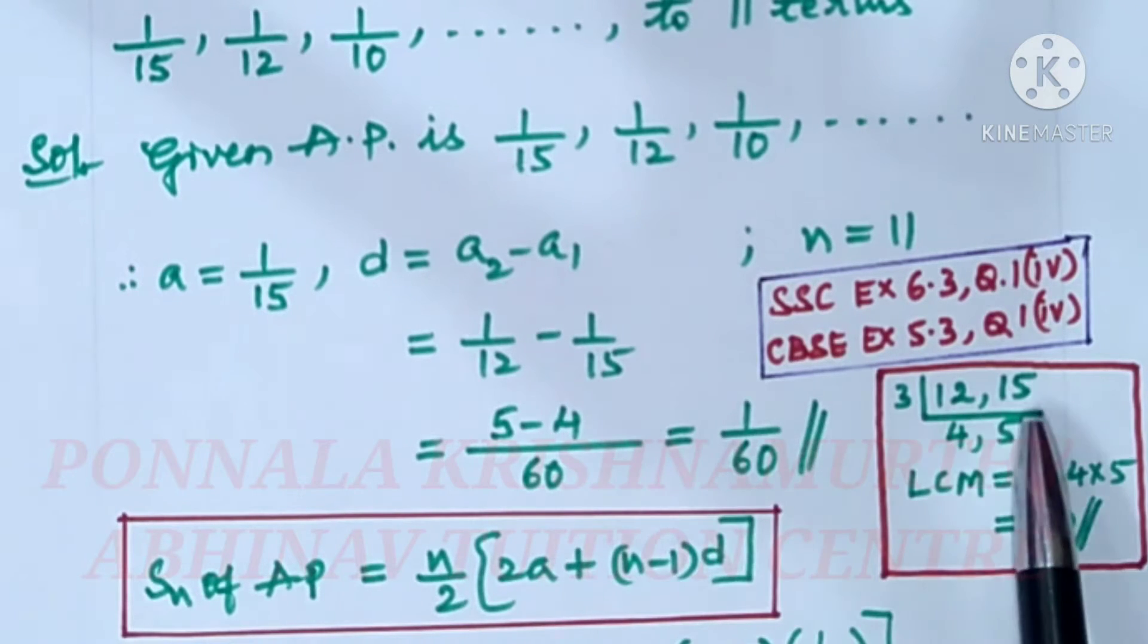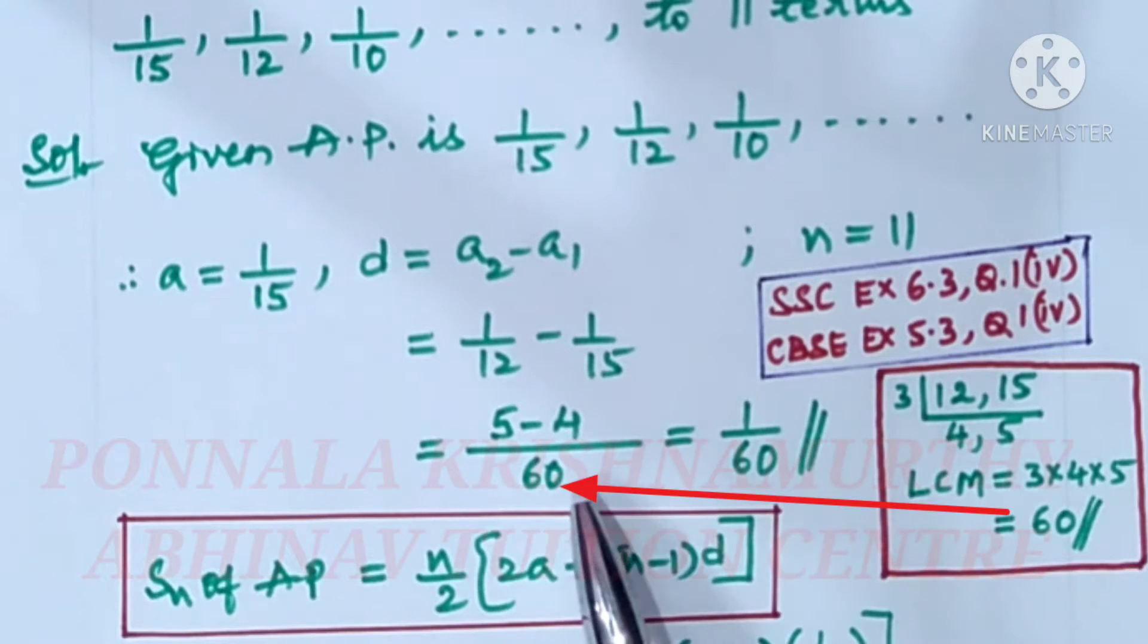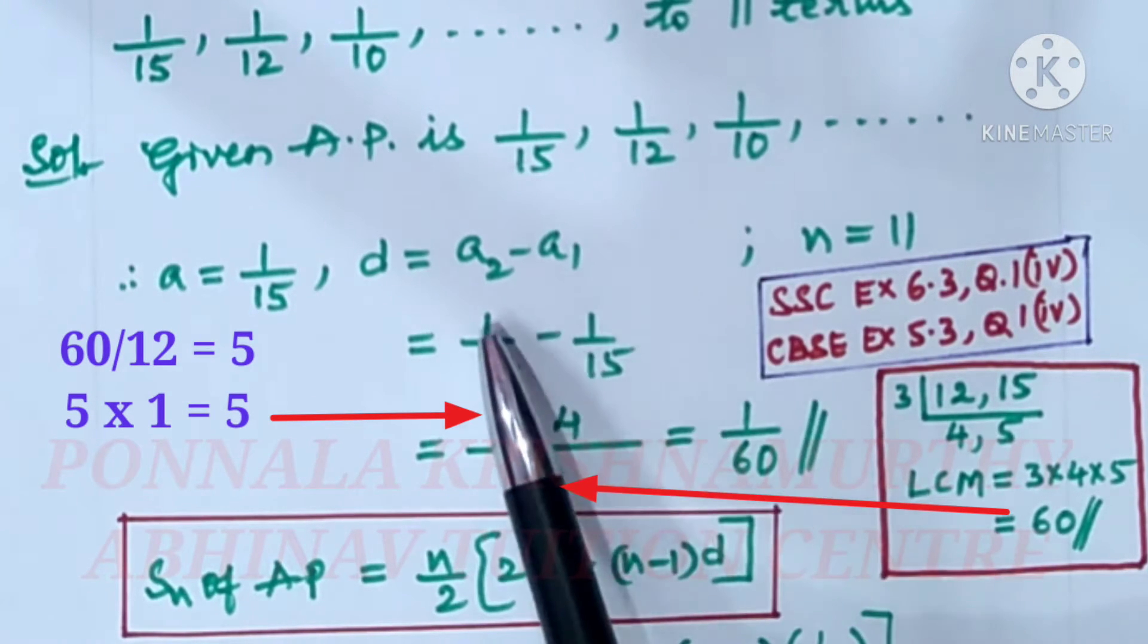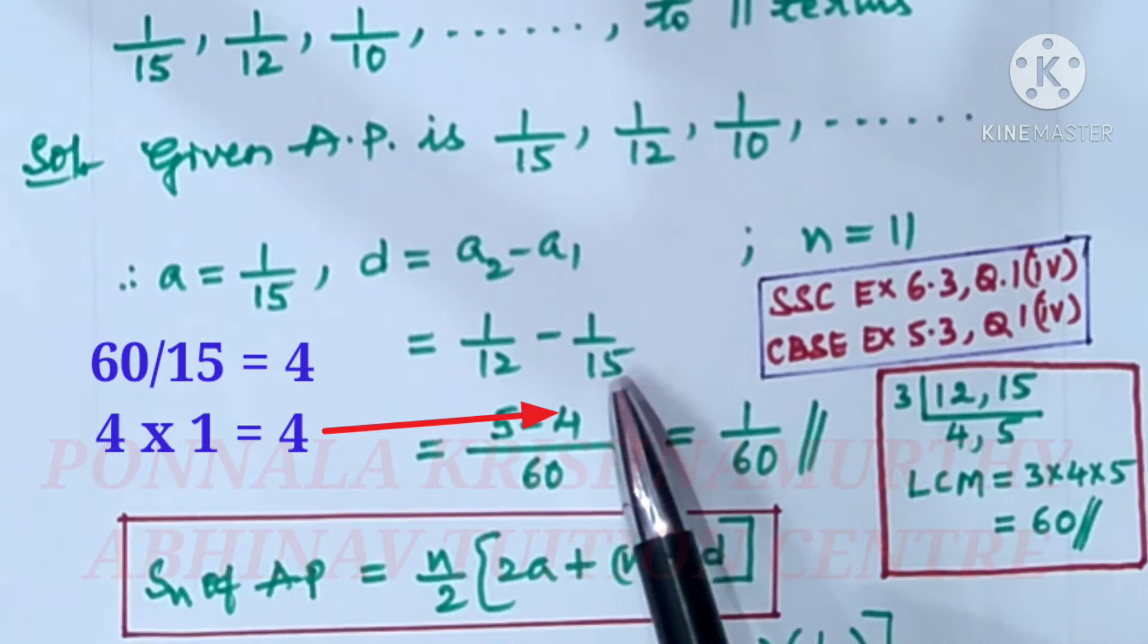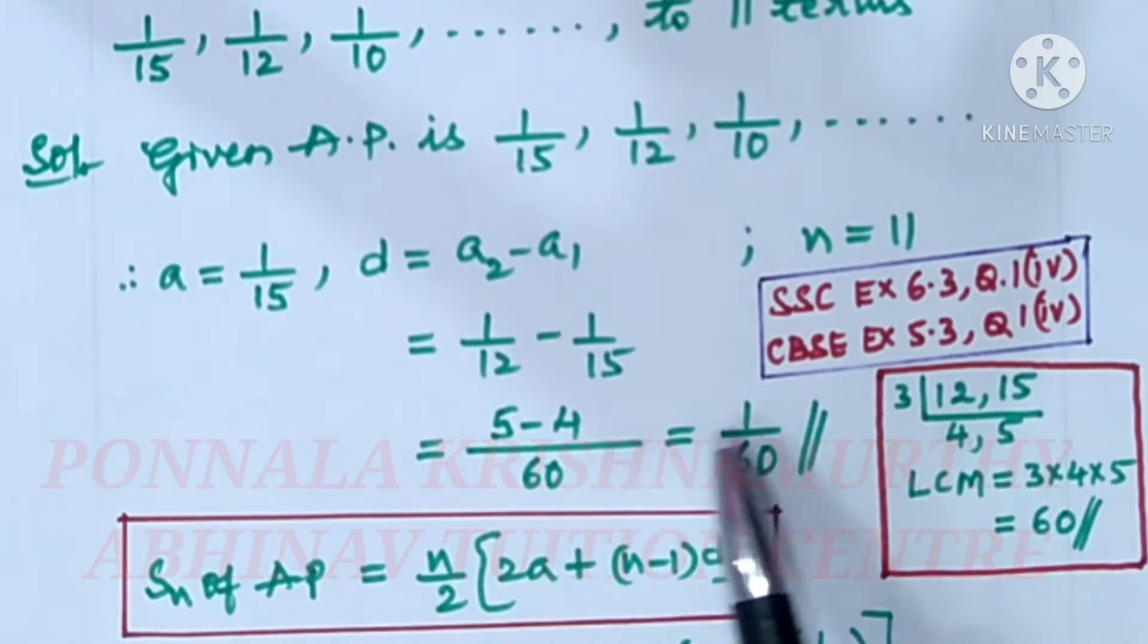LCM for 12 and 15 is 60. 60 divided by 12 is 5, that 5 into 1 is 5. 60 divided by 15 is 4, that 4 into 1 is 4. 5 minus 4 is 1, so this is 1/60.